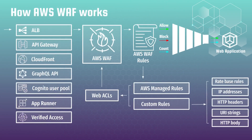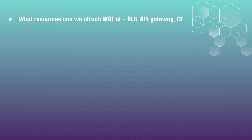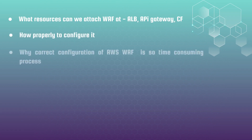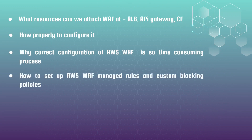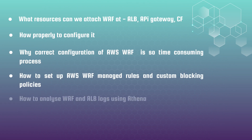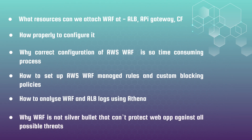In the third section, we will speak about AWS WAF — Web Application Firewall. I will show you examples of real attacks that were blocked by WAF, taken from my commercial experience, so you can feel its real power as a security defense tool. We will discuss in detail what resources can be attached to WAF — like ALB, API Gateway, or CloudFront — how to configure it properly, why correct configuration of AWS WAF is such a time-consuming process, how to set up managed rules and custom blocking policies, how to analyze WAF and Application Load Balancer logs using Athena, and why WAF is not a silver bullet that can protect a web application against all possible threats.